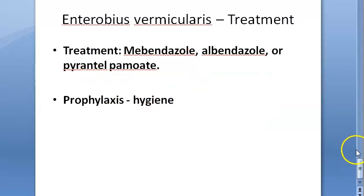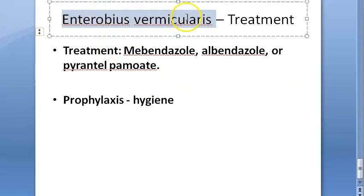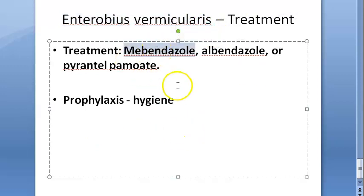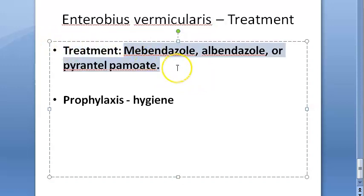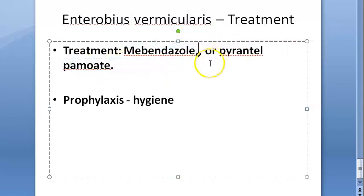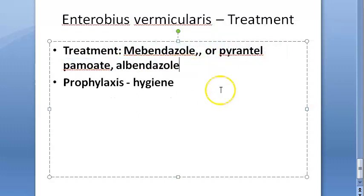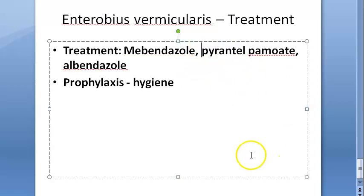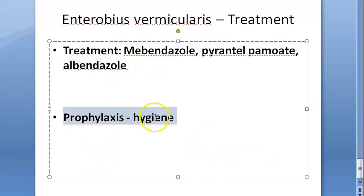Treatment of Enterobius vermicularis uses standard anti-helminthic drugs: mebendazole, pyrantel pamoate, and albendazole — the same drugs used for nematodes in pharmacology. Prevention and prophylaxis are achieved through hygiene and food quality measures.